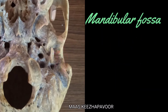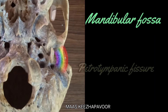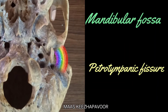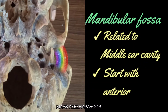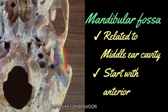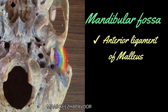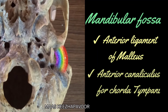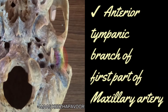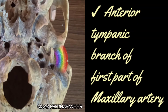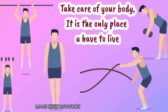Between the articular and non-articular parts, the squamotympanic fissure is seen, which is divided into two — petrosquamous and petrotympanic — by the downturned anterior edge of the tegmen tympani. In the petrosquamous fissure there are no structures, but in the petrotympanic fissure there are three structures passing, and all three are related to the middle ear cavity and start with the word 'anterior': the anterior ligament of malleus, the anterior canaliculus for chorda tympani, and the anterior tympanic branch of the first part of the maxillary artery.